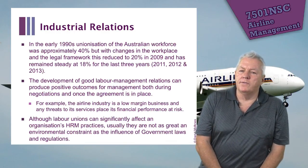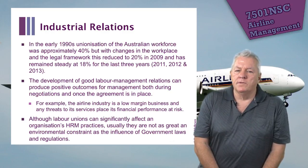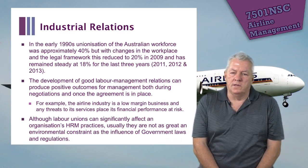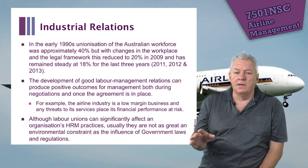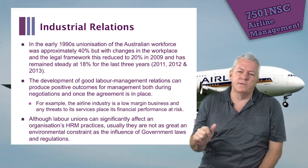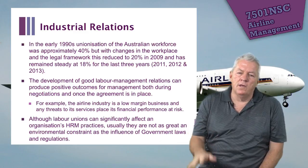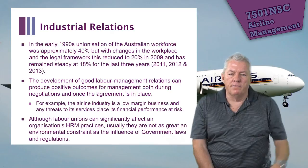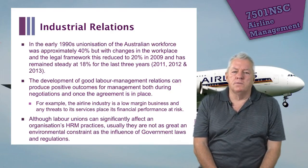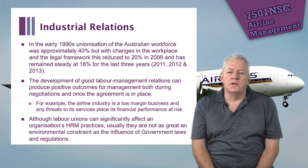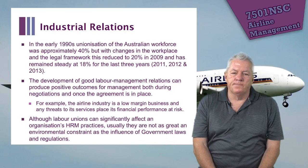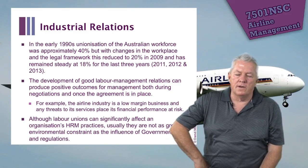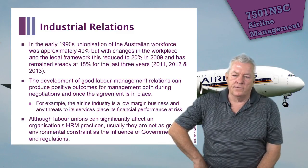In the early 1990s, unionisation of the Australian workforce was approximately 40%, but this has reduced quickly. It was 20% in 2019 and has remained steady at 18% for the last three years. The largest employer of people in Australia is small business, and most people who work in small businesses aren't members of unions. But even for larger organisations, union membership has dropped to quite a low level. The development of good labour management relations can produce positive outcomes both during negotiations and once the agreement is in place. The airline industry is a low-margin business and any threats to its services place great financial strain on it.